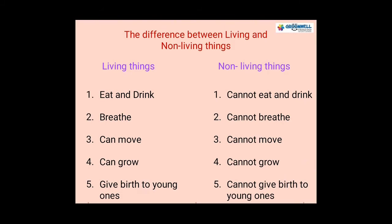Now let's see the differences between living and non-living things. As you can see in the slide, there are two columns. First, living things can eat and drink, but non-living things cannot. Second, living things can breathe, but non-living things cannot. Third, living things can move, but non-living things cannot. Fourth, living things can grow, but non-living things cannot. Fifth, living things give birth to young ones, but non-living things cannot.